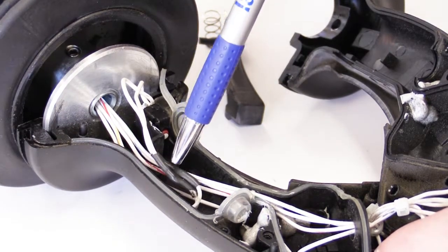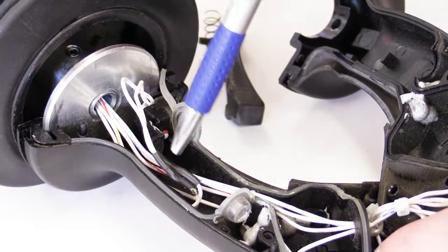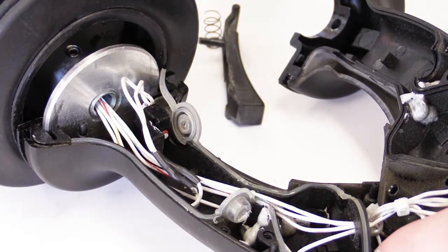You're going to want to reinstall the two zip ties that were holding these harnesses down with the one clip and the Torx bit screw.